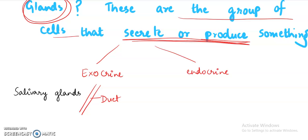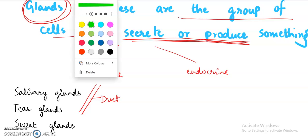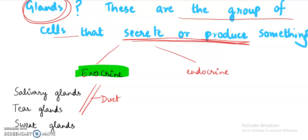Similarly, tear glands also fall in the category of exocrine glands because tears come to our eye with the help of a duct. Sweat glands present in our body also fall in the same category because they produce secretion through a duct. So we have seen that exocrine glands are the ones that pour their secretion into a duct, and the examples are salivary glands, tear glands, and sweat glands.